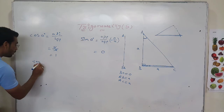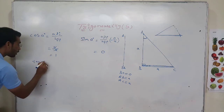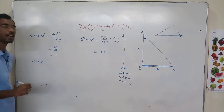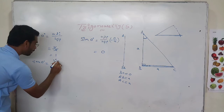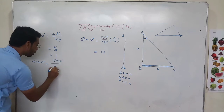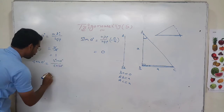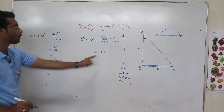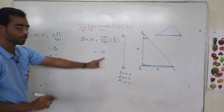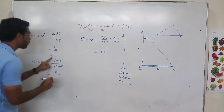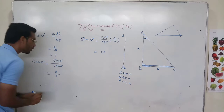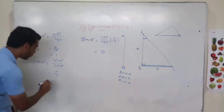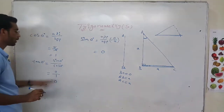Now we will see tan 0 degrees. Tan theta equals sin 0 degrees by cos 0 degrees. Sin 0 is 0 and cos 0 is 1, so 0 by 1 equals 0. Tan 0 degrees equals 0.